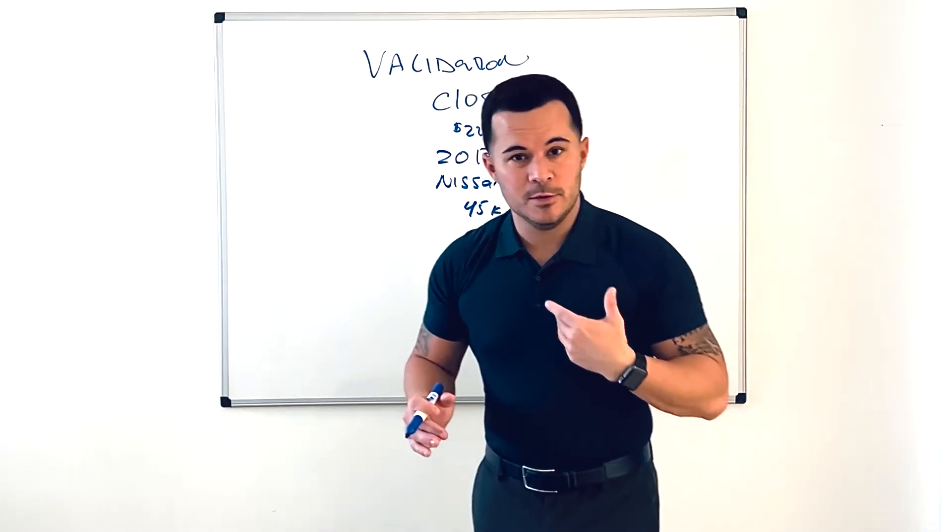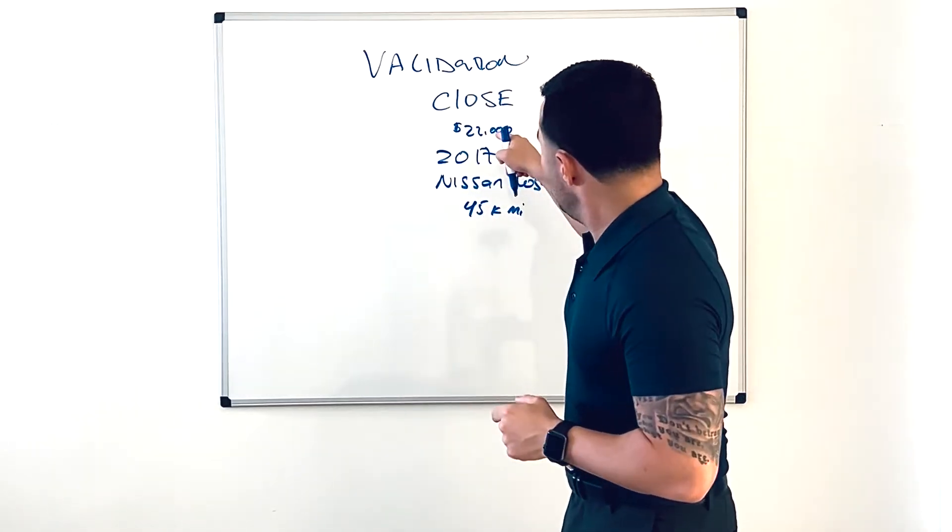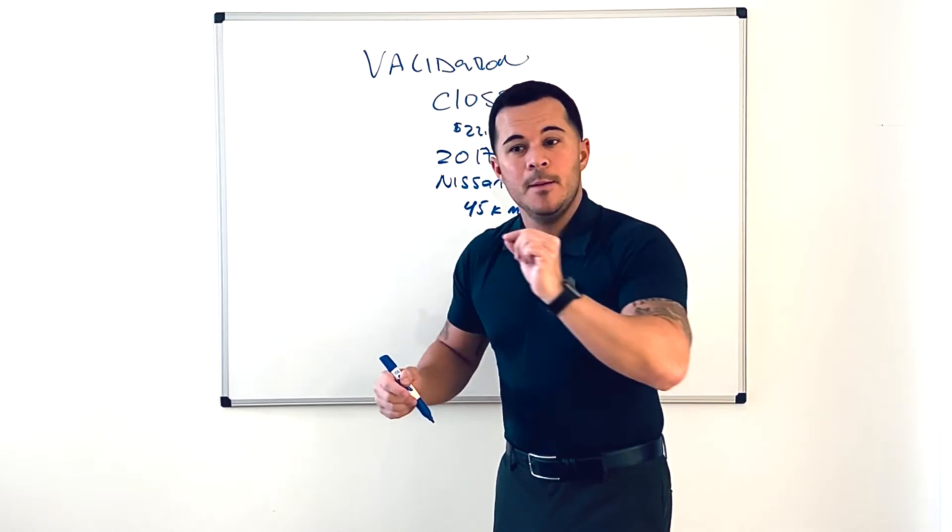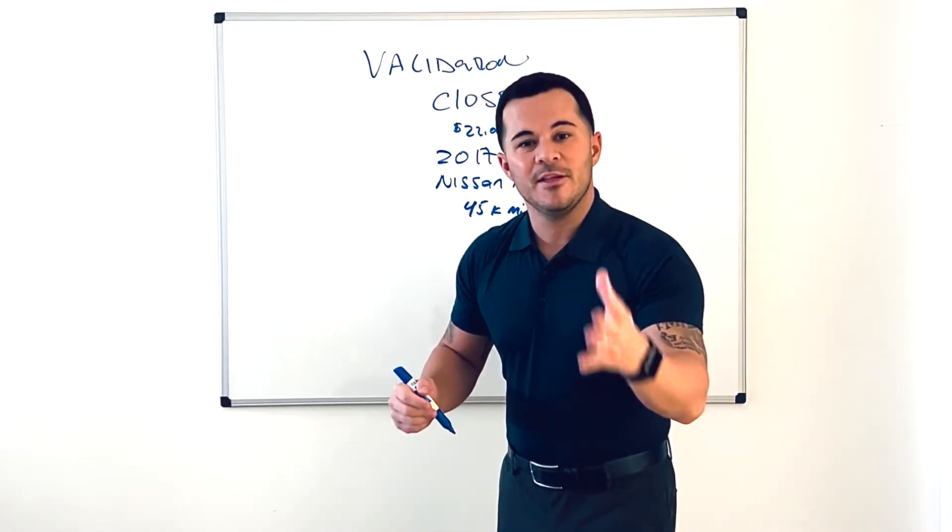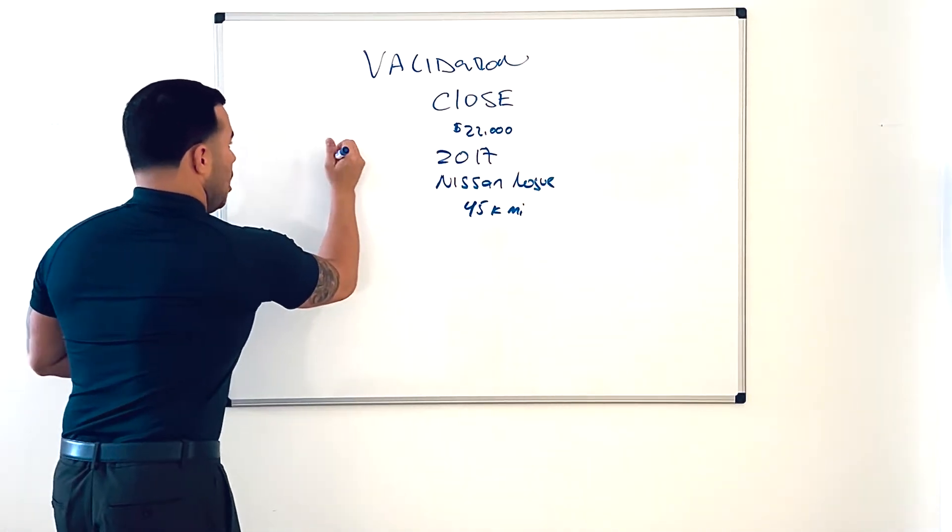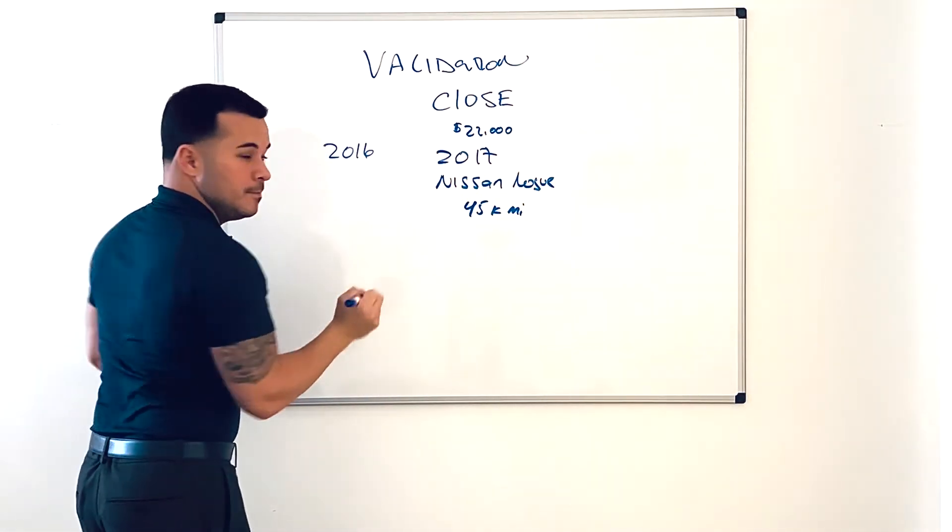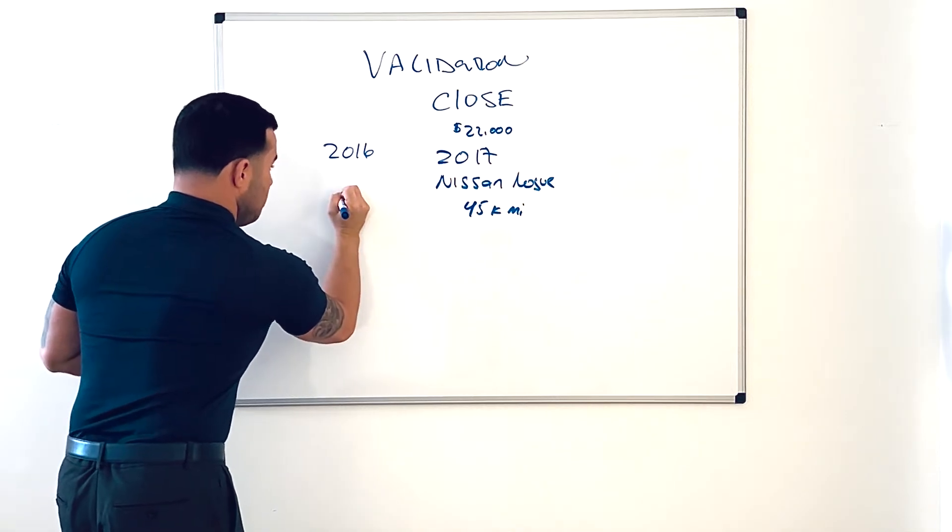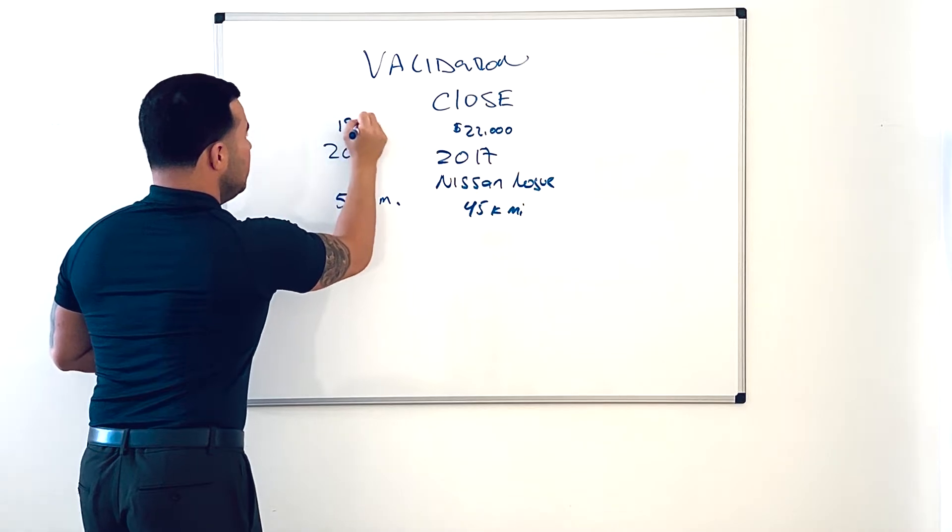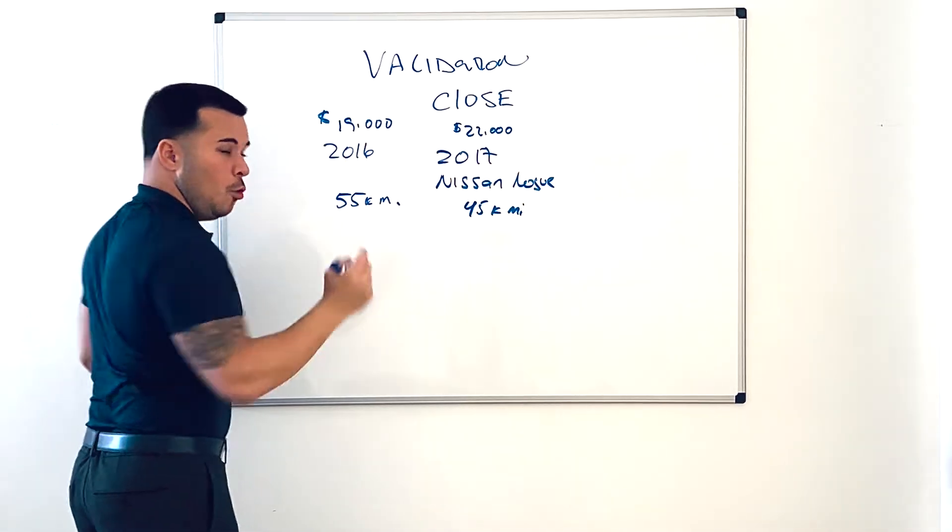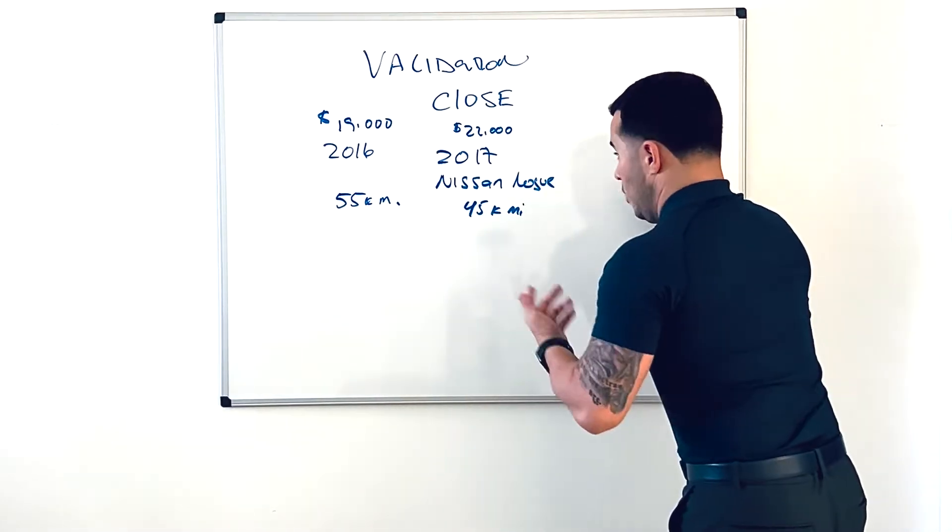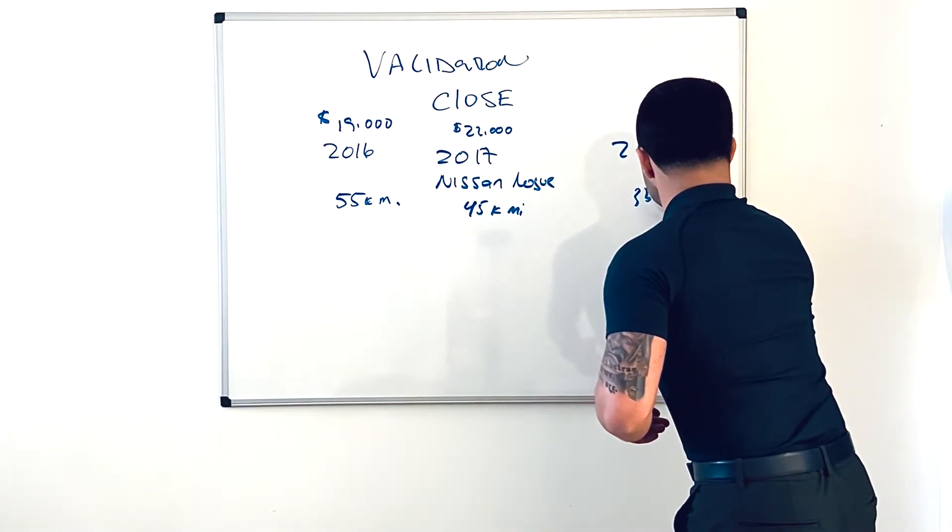So I'm going to write this down on a piece of paper as I'm negotiating the deal. I would say to them, "The best we can actually do on the Rogue would be the $22,000 sale price on this vehicle. But let me ask you this: what if I was able to find you a 2016 with say 55,000 miles on the vehicle for only $19,000? Or what if I was able to find you a 2018 with only 35,000 miles on the vehicle for say only $25,000?"